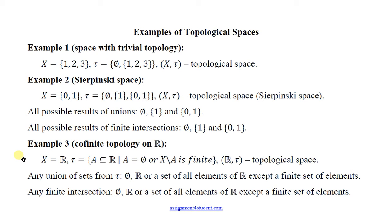And the third example is cofinite topology. Let X be the set of real numbers, and tau will be the set of such sets A, that A is empty, or X minus A is finite. In this case all three conditions are satisfied, because any union and any finite intersection will result in sets from tau. Note that here finite is important because if we take an infinite intersection of sets from tau, then this intersection may not satisfy these conditions.